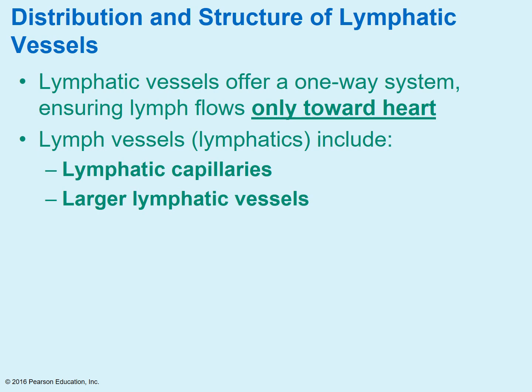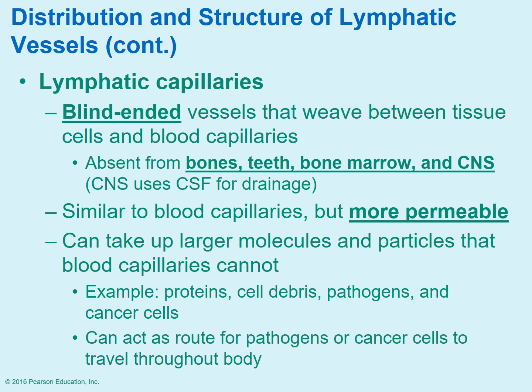The lymphatic vessels are essentially a one-way street — a one-way pathway. The only way the lymph is going to flow is towards the heart. The vessels contain capillaries, so they start off small and get increasingly larger, similar to the way the veins are as they approach the heart. The lymphatic capillaries are what we call blind-ended. They're going to weave throughout the tissues and are often very close to or embedded within the capillary bed itself. They are not present in bones, teeth, bone marrow, or the central nervous system.